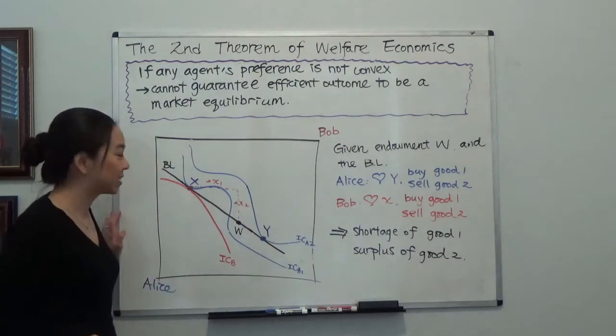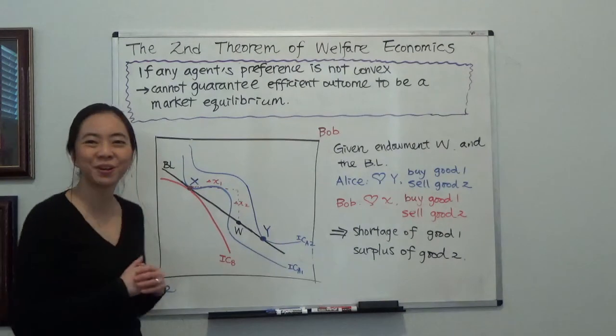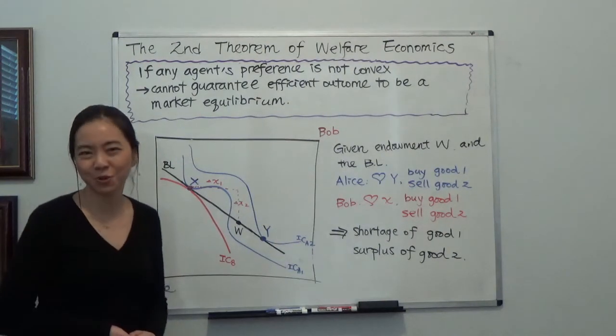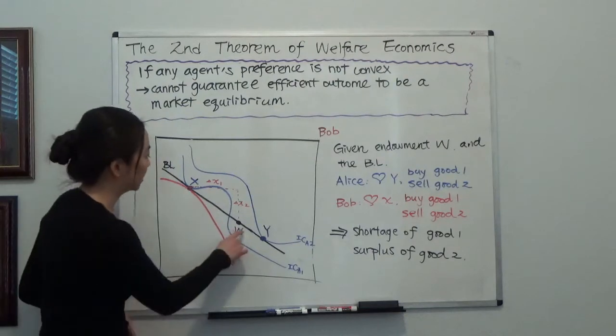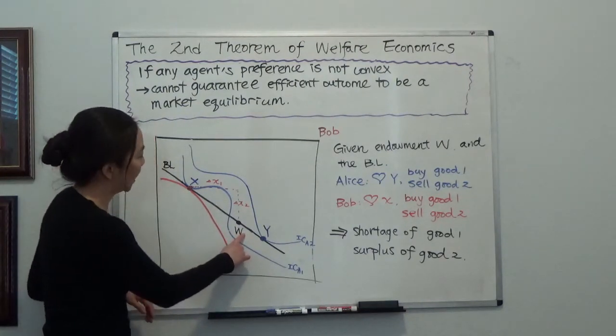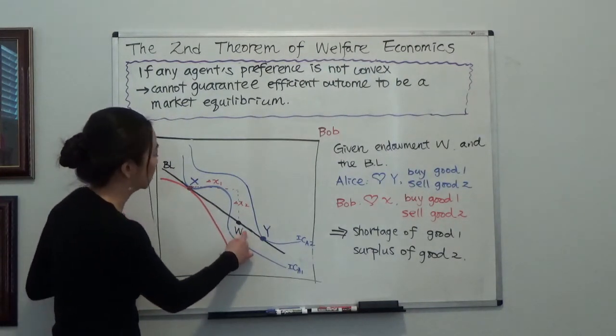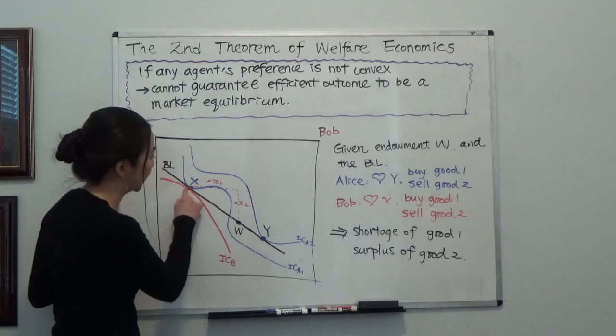Now you ask, can this price ratio clear the market? And the answer is no. So why not? Suppose our initial endowment is W. And Bob will say that, you know what,